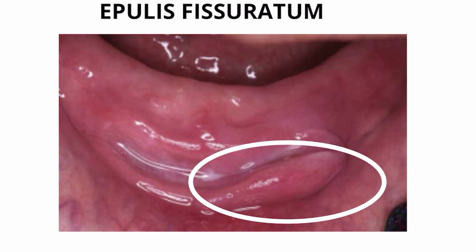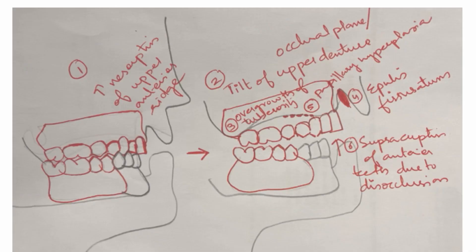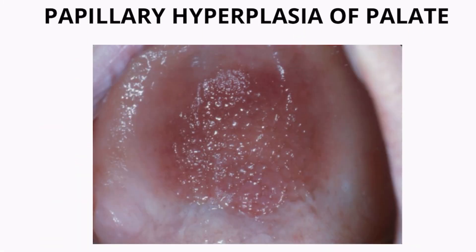Since the denture is tilted anteriorly and there is no proper contact in the posterior region, there is going to be an overgrowth of the tuberosity. Along with this, due to the negative pressure on the hard palate, papillary hyperplasia of the hard palate may develop. This is what papillary hyperplasia of the hard palate looks like when it develops due to negative pressure.